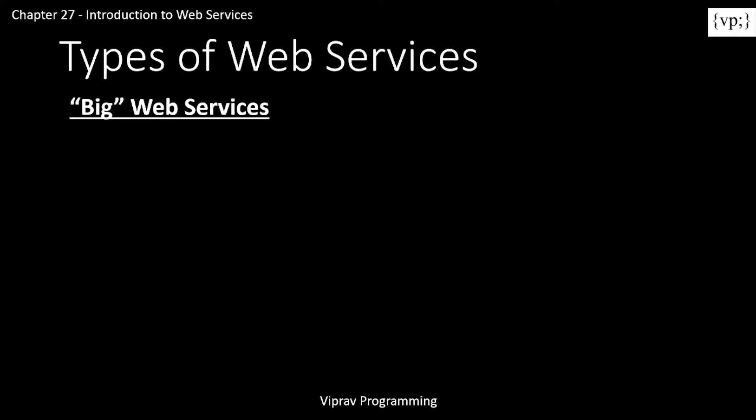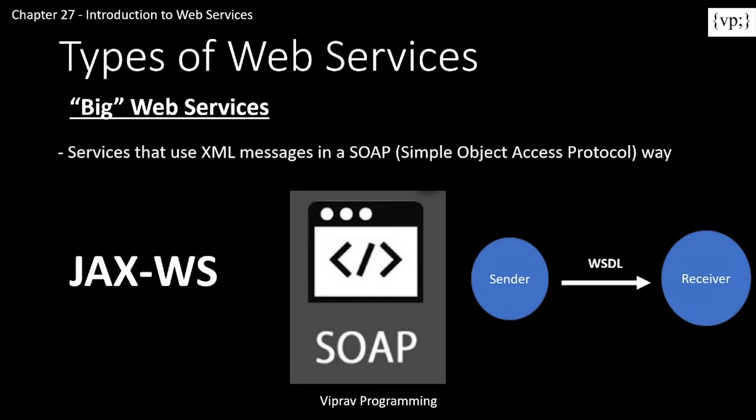So there are different types of web services. On a technical level, web services can be seen in two ways: either big web services or RESTful web services. JAXWS provides the functionality of big web services, which are services that use XML messages in a SOAP — simple object access protocol — way.